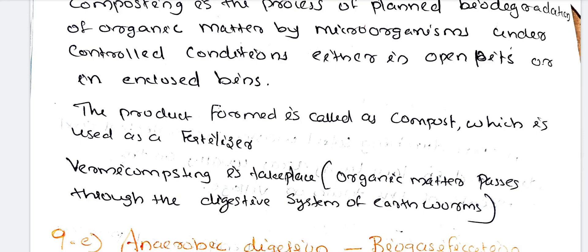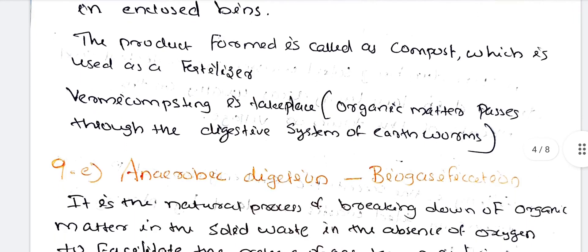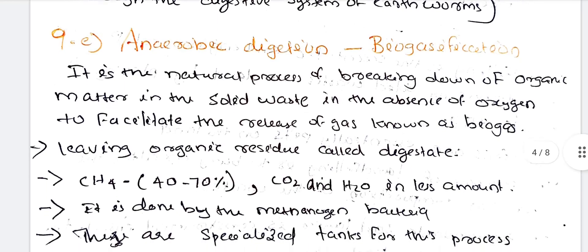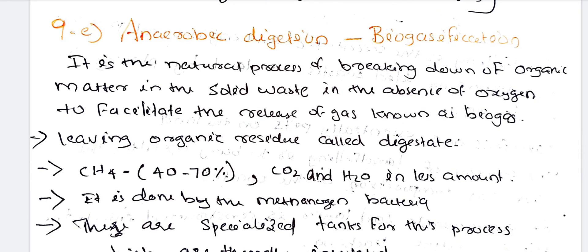Vermicomposting also takes place. Next: anaerobic digestion or biogasification. It is a natural process of breaking down organic matter in solid waste in the absence of oxygen to facilitate the release of gas known as biogas.